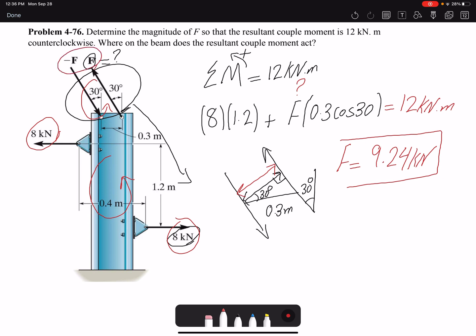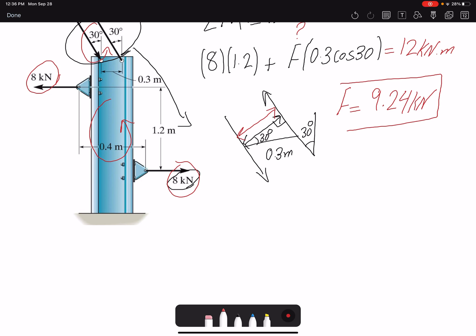A couple moment is a free vector, so it acts at any point on or off the beam. If you want to write it, since the couple moment is a free vector, the resulting couple moment can act at any point on or off the beam.